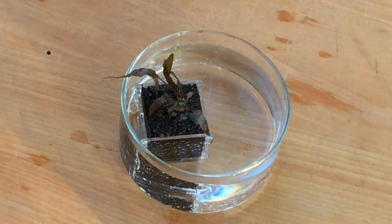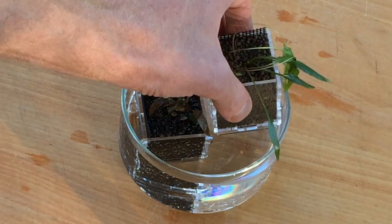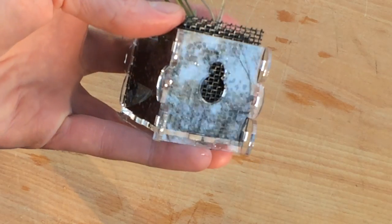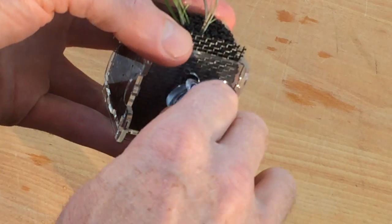By also dipping the planter with the plant and substrate in a shallow dish of water I can cause the substrate to further settle into the planter and rehydrate the plant roots.